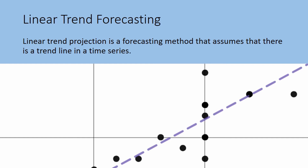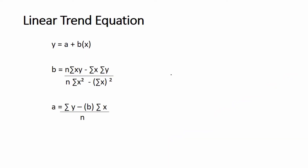That means that linear trend forecasting is a great tool for predicting what value something will have in the future. To forecast data using linear trend analysis, also called linear regression, we use the linear trend line equation.